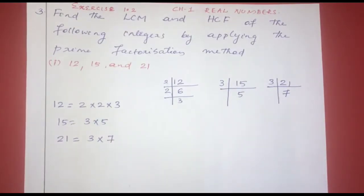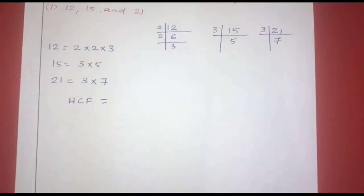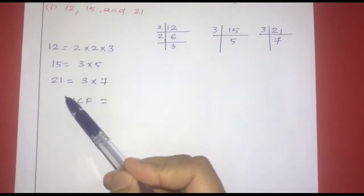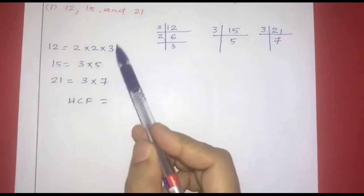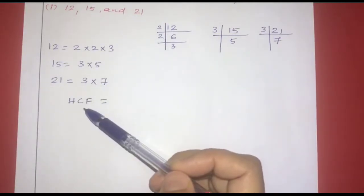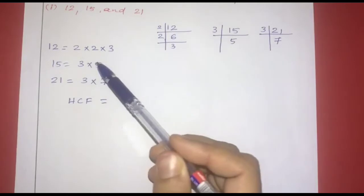Now let's find the HCF and LCM. For HCF of 12, 15, and 21, we look at the common factors.